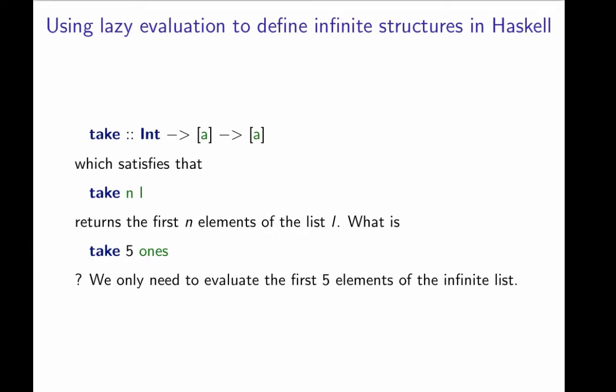And why does this work? Well, it works because we only need to evaluate the first 5 elements of the infinite list. That's all we need. We only need to evaluate a finite part of the infinite structure. And that's where lazy evaluation comes into play.